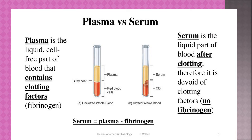To clarify the difference between plasma and serum: plasma is the liquid, cell-free part of unclotted whole blood that contains clotting factors including fibrinogen. Serum is the liquid part of blood after clotting, and is therefore devoid of clotting factors — no fibrinogen. Serum is plasma minus fibrinogen.